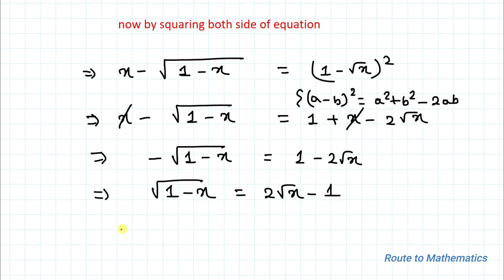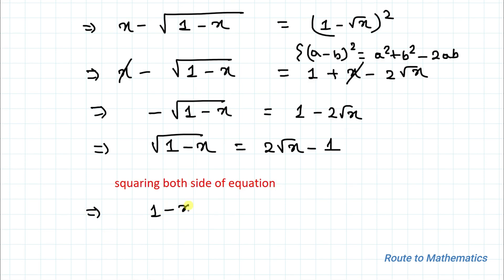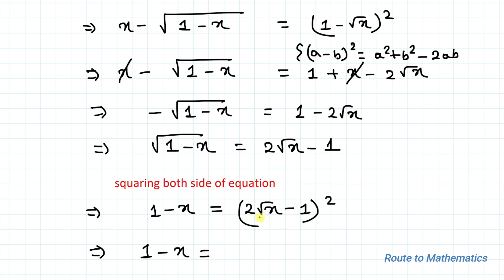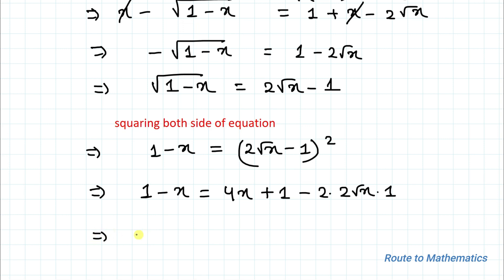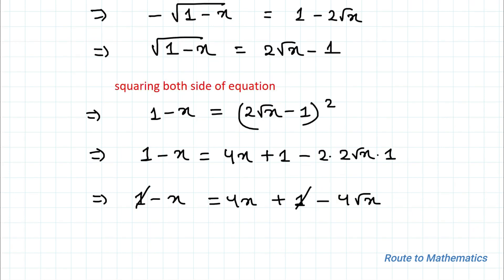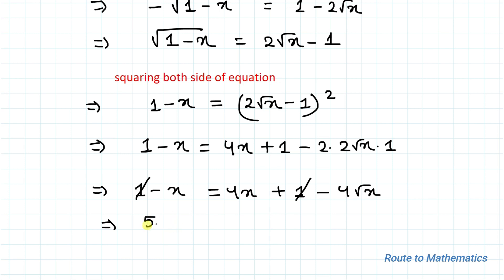Again squaring both sides of the equation in order to eliminate the square root. This implies 1 − x = (2√x − 1)², and applying the algebraic identity (a − b)² gives us 4x + 1 − 4√x. The 1 and 1 cancel out, and taking all terms to one side of the equation we have 5x − 4√x = 0.